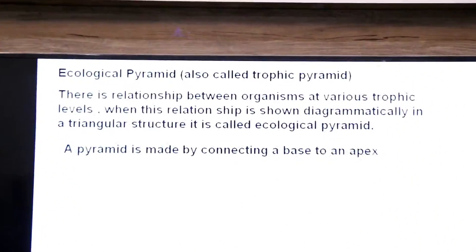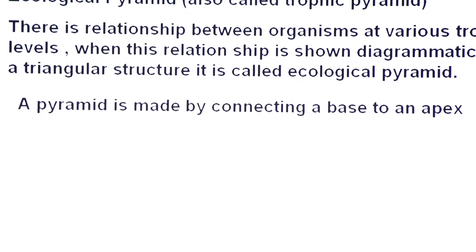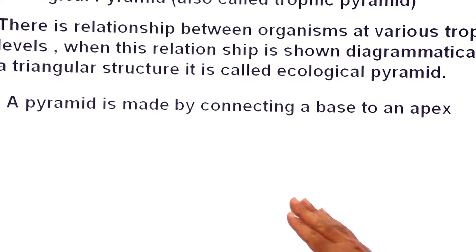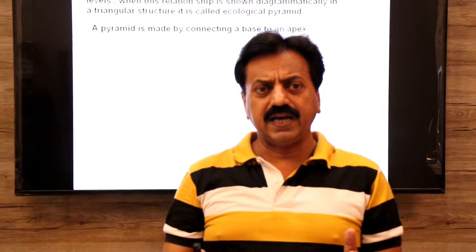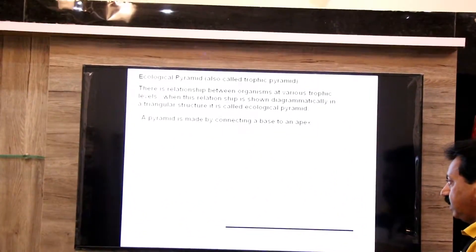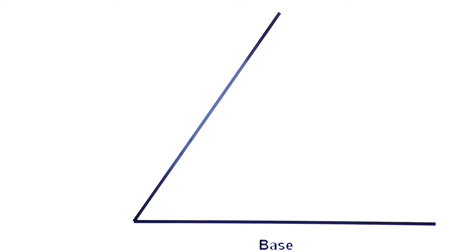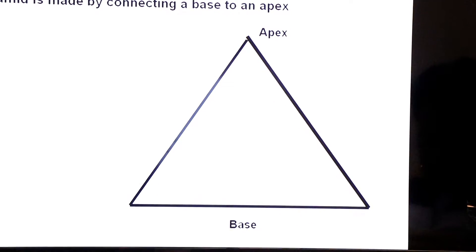How is a pyramid made? A pyramid is made by connecting a base to an apex. You start by drawing a base — this is the base of the pyramid. Then you draw two slope lines meeting at the apex. This gives you a triangular structure, and this is the ecological pyramid.